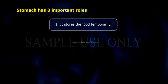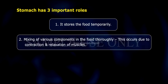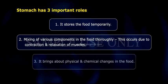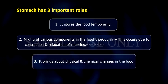The stomach has three important roles: one, it stores food temporarily; two, it thoroughly mixes the various components of food through contraction and relaxation of muscles; and three, it brings about physical and chemical changes in the food.